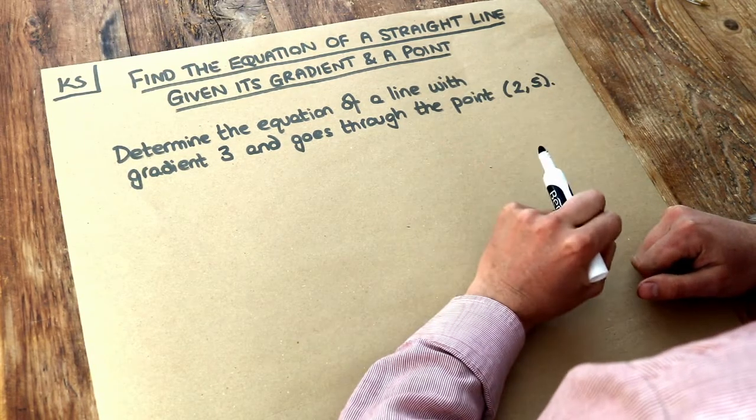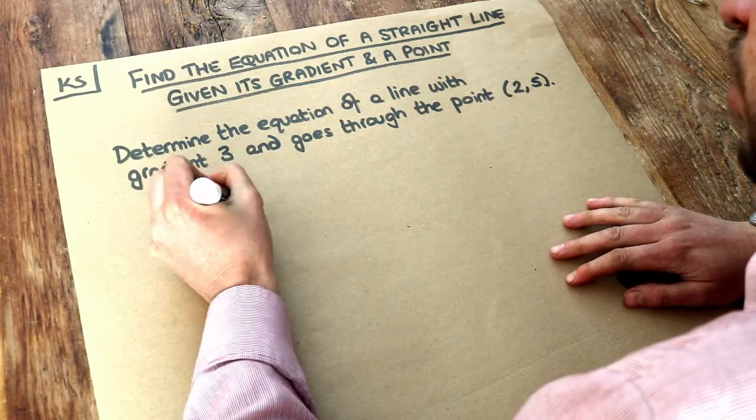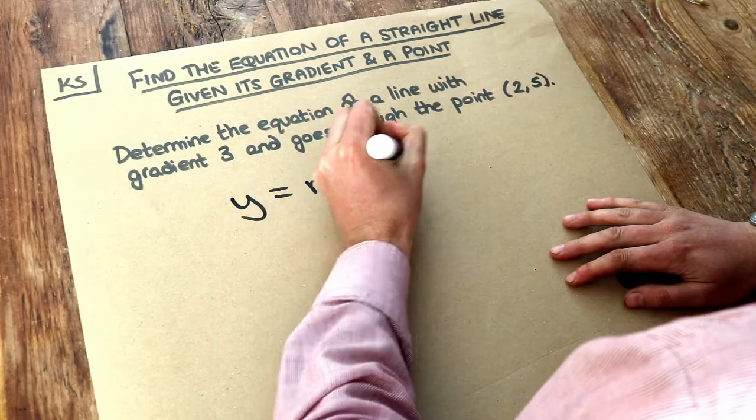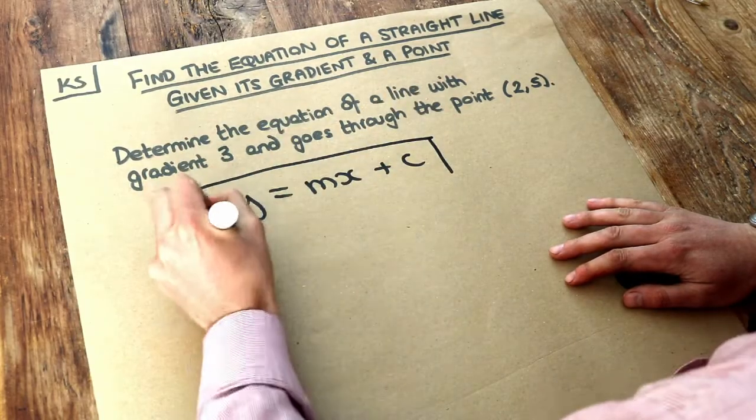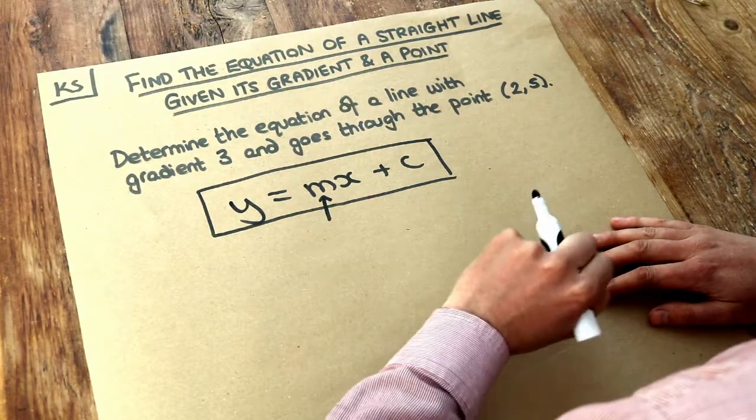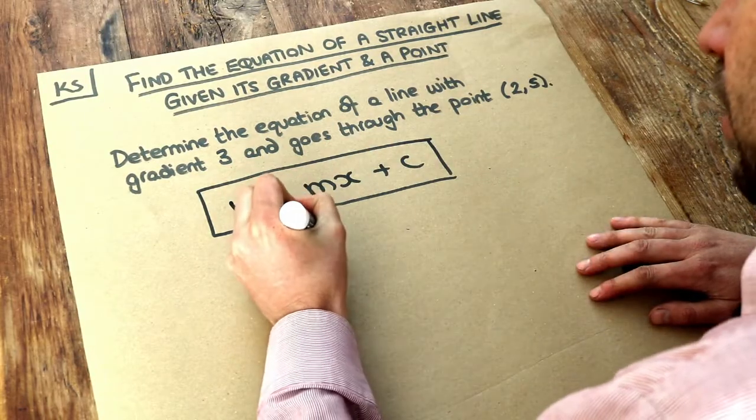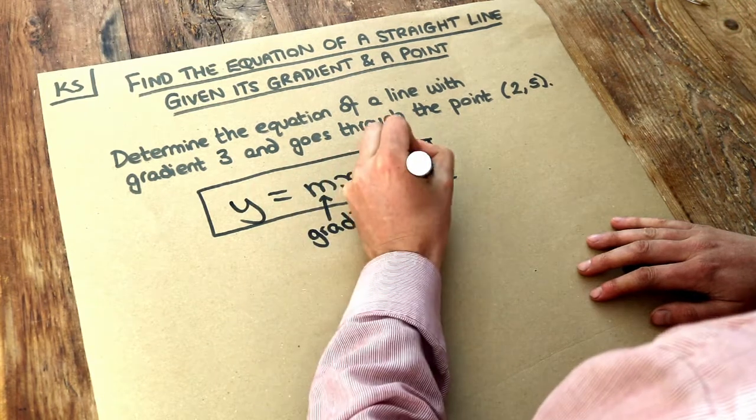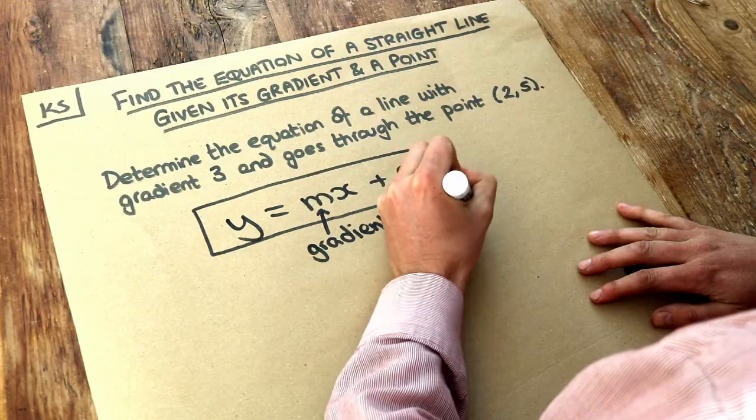Now in previous videos on straight line equations we saw that the general equation of a straight line was y equals mx plus c. And just to remind you what the bits of that were, the m, the coefficient of x as it's formally known, is the gradient and the c is the y-intercept of the line.